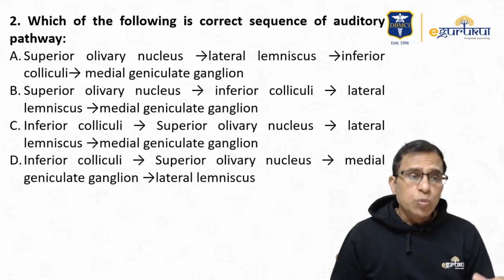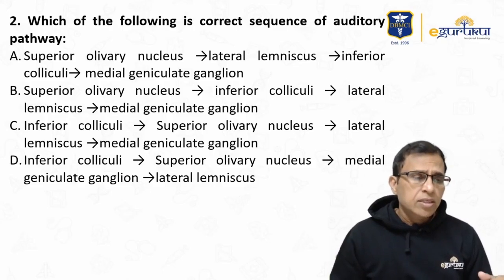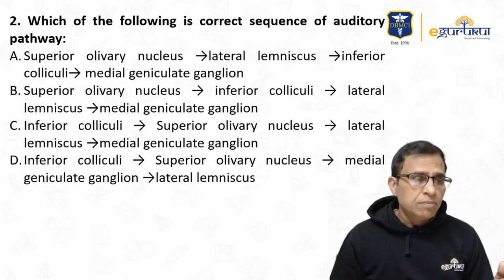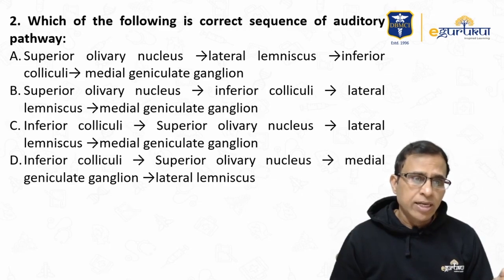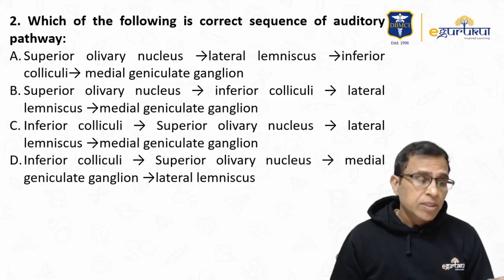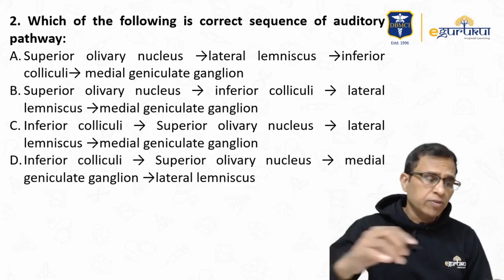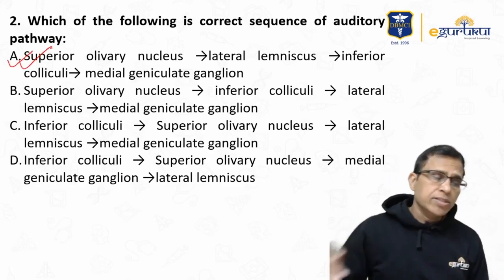The second question asks: which of the following is the correct sequence for the auditory pathway? Option A: superior olivary nucleus → lateral lemniscus → inferior colliculi → medial geniculate ganglion. Option B: superior olivary nucleus → inferior colliculi → lateral lemniscus → medial geniculate ganglion. Option C: inferior colliculi → superior olivary nucleus → lateral lemniscus → medial geniculate ganglion. Option D: inferior colliculi → superior olivary nucleus → medial geniculate ganglion → lateral lemniscus. A is the correct answer.